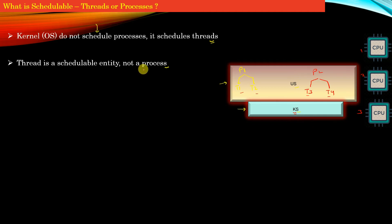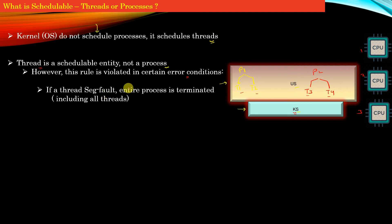However, the fact that the operating system sees threads as schedulable entities and not processes is violated in certain error conditions. The first error condition is if a thread commits some crime and causes a segmentation fault, then the entire process is terminated by the operating system, including all threads of that process.